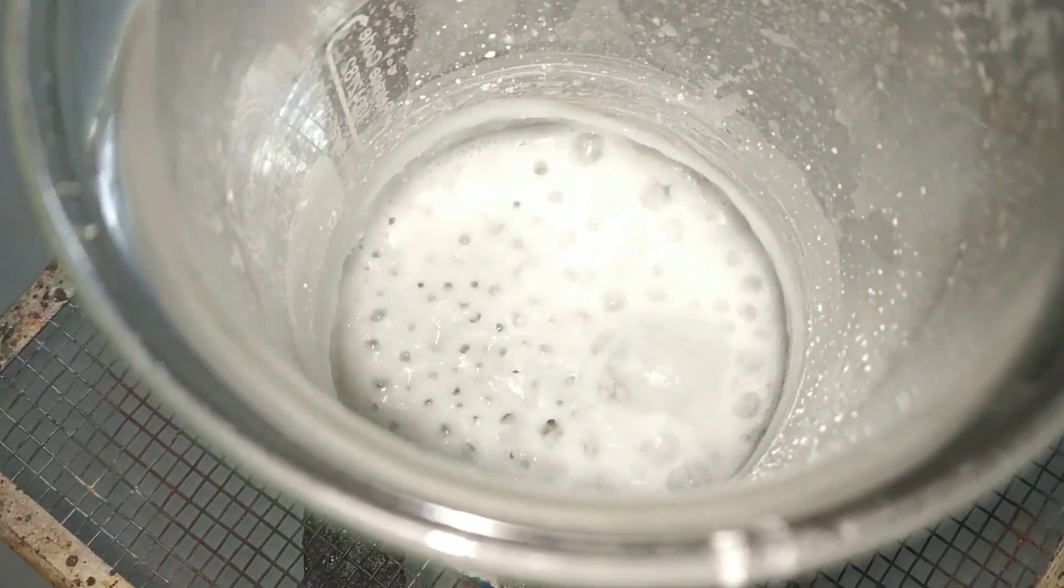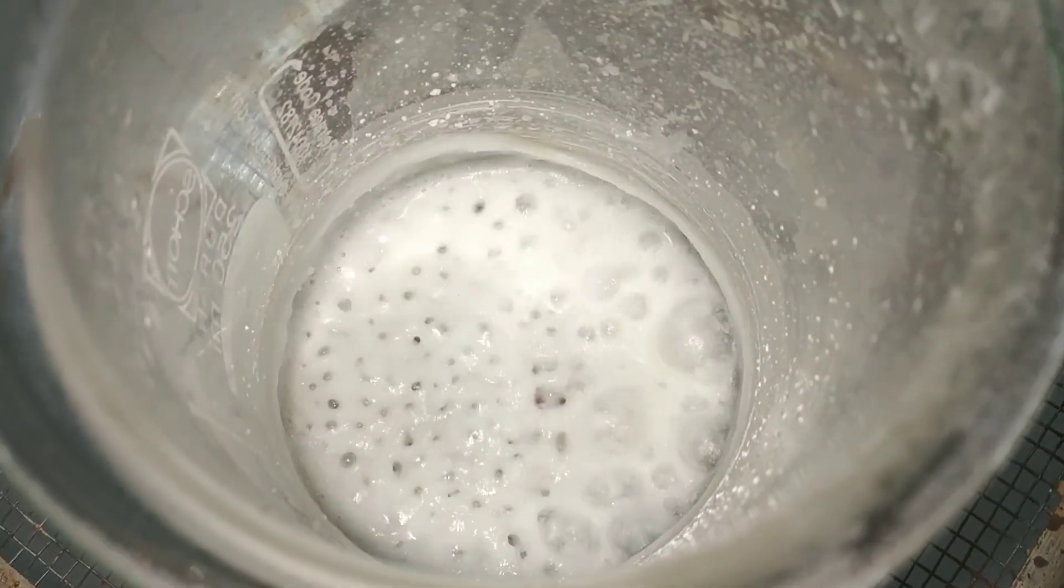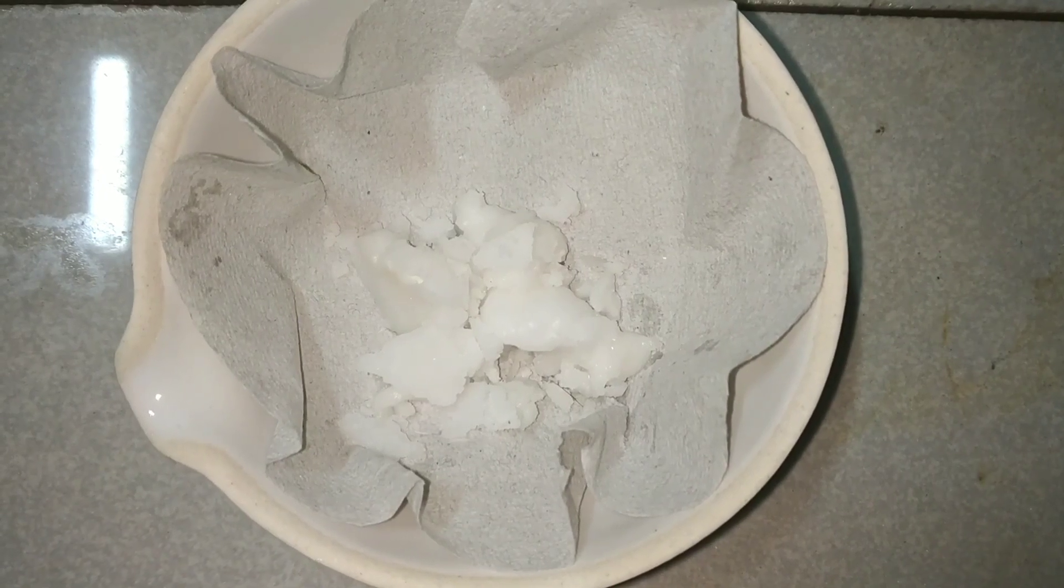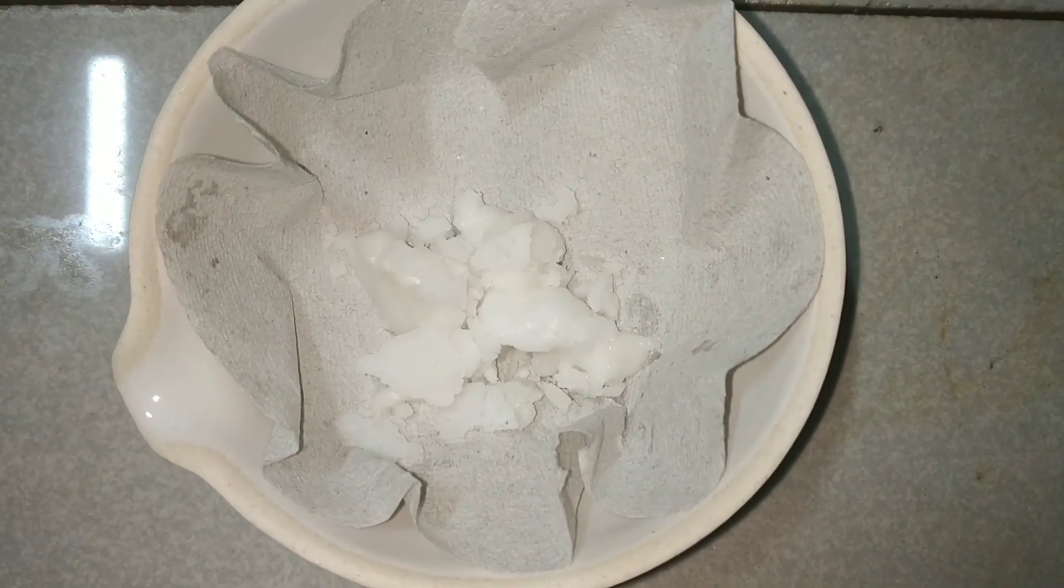Now we heat the solution to boil in order to collect the crystals. We can boil down the solution to dryness to obtain the solid product, and this is the final product, that is the disodium hydrogen phosphate.